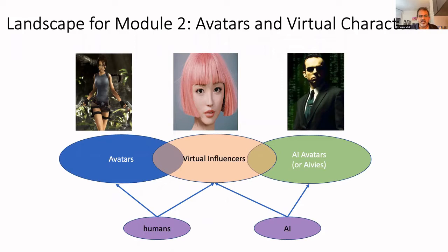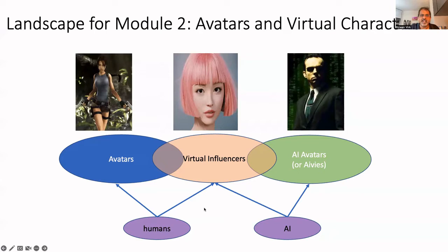On either side of the continuum, we have avatars, which represent the player — here we have a picture of Lara Croft from Tomb Raider. On the opposite side, we have AI avatars, which I like to call avis for short, falling in the category of NPCs or non-player characters. Somewhere in the middle, we have virtual influencers, a trend that has gotten really big over the past five or six years, usually involving some element of AI and some element of deception where people think it's AI but it's really controlled by humans.